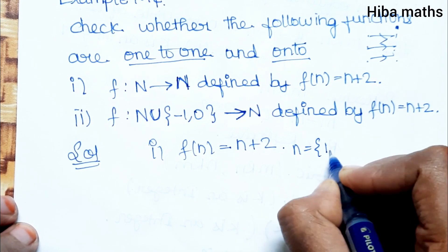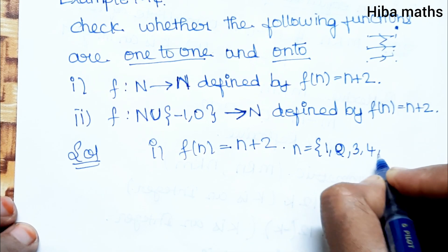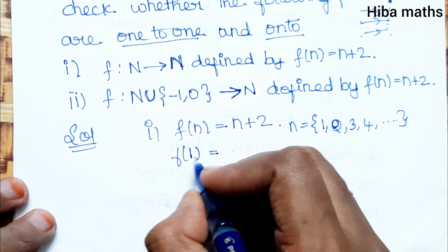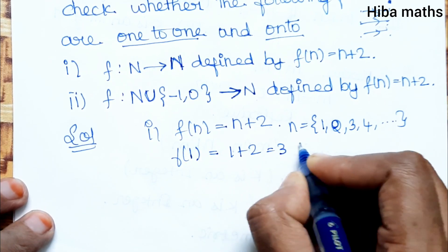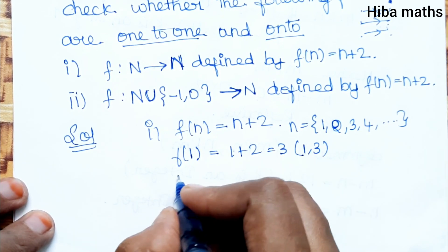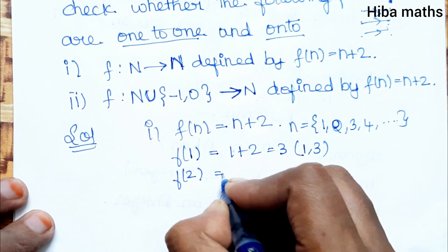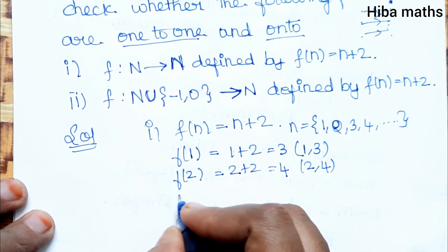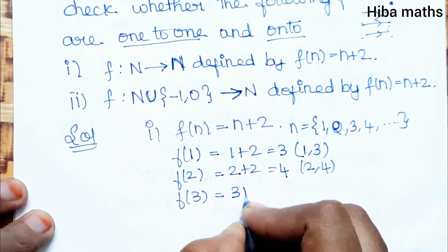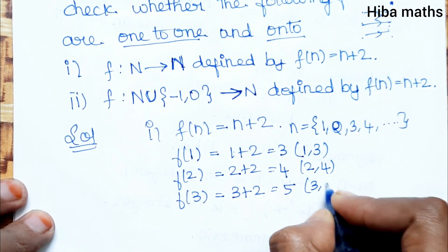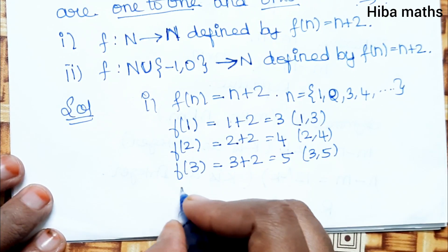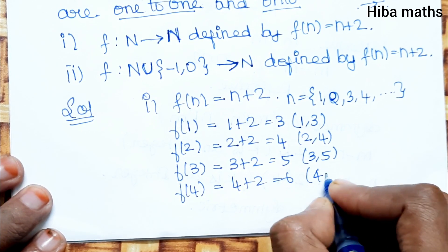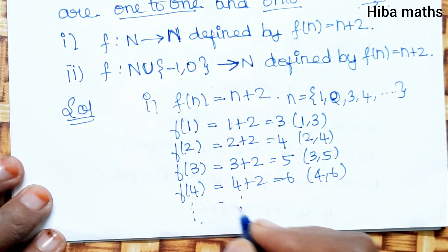n is a natural number: 1, 2, 3, 4 and so on. f(1) = 1 + 2 = 3, so (1, 3). f(2) = 2 + 2 = 4, so (2, 4). f(3) = 3 + 2 = 5, so (3, 5). f(4) = 4 + 2 = 6, so (4, 6), and it goes on. These are the image values.